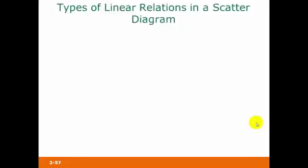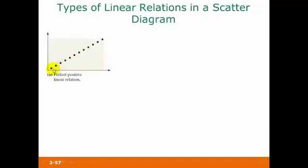If we're just looking at linear relations, then we have some further breakdowns of what type of relations we can have. This one would have a perfect positive linear relation. These points are exactly in a straight line, which gives us a perfect linear relationship, and the line is going up as we go from left to right, so this would be a perfect positive association.